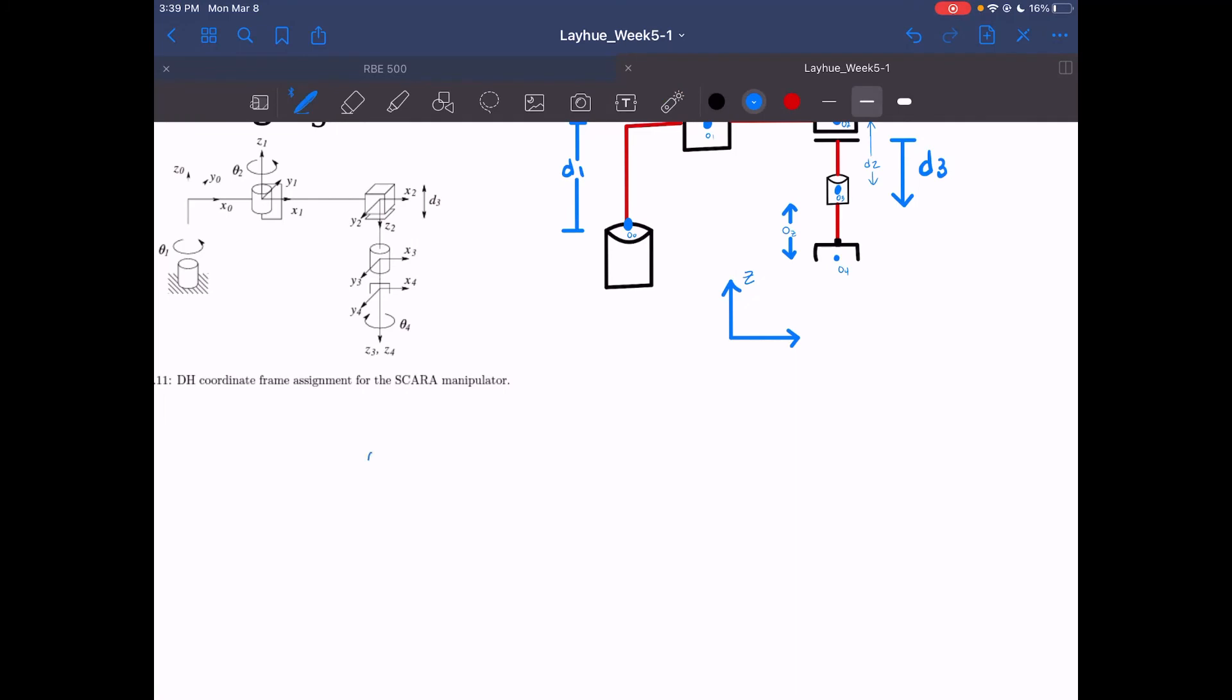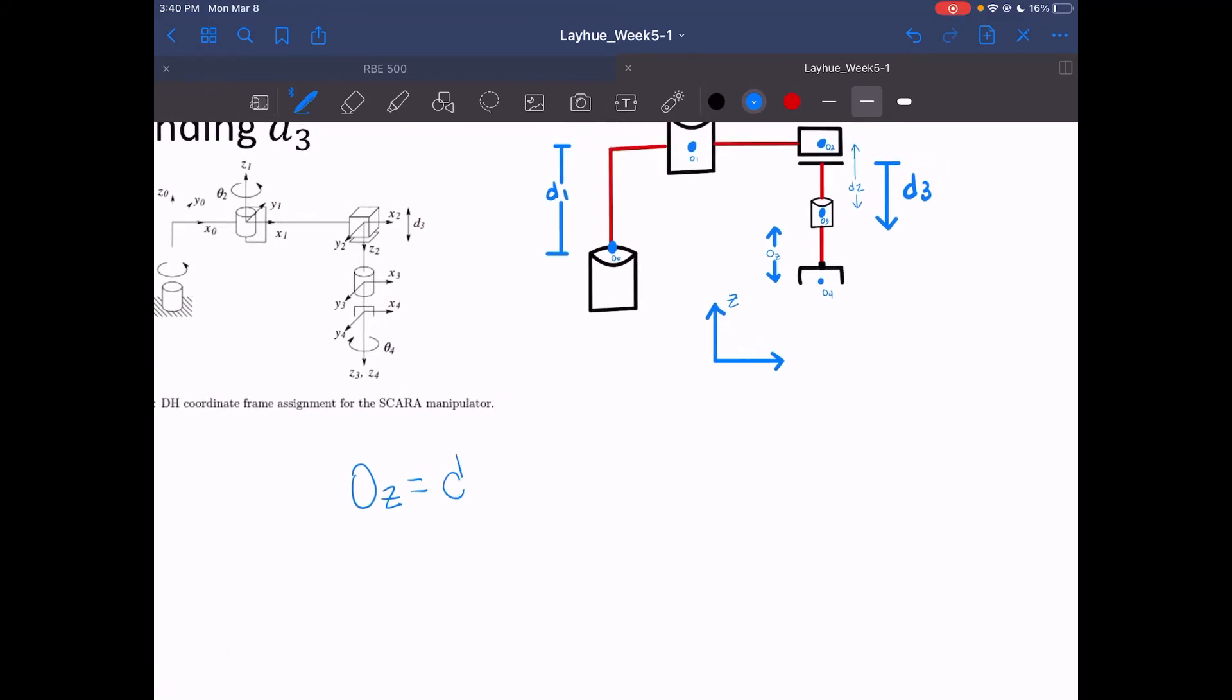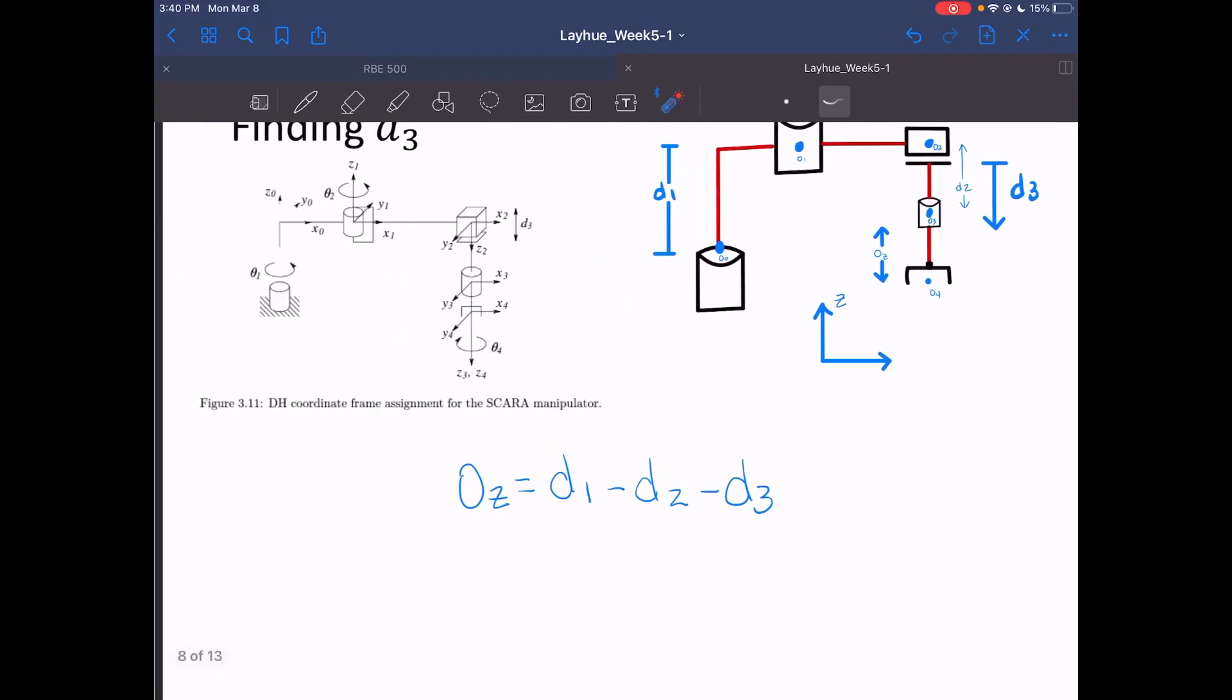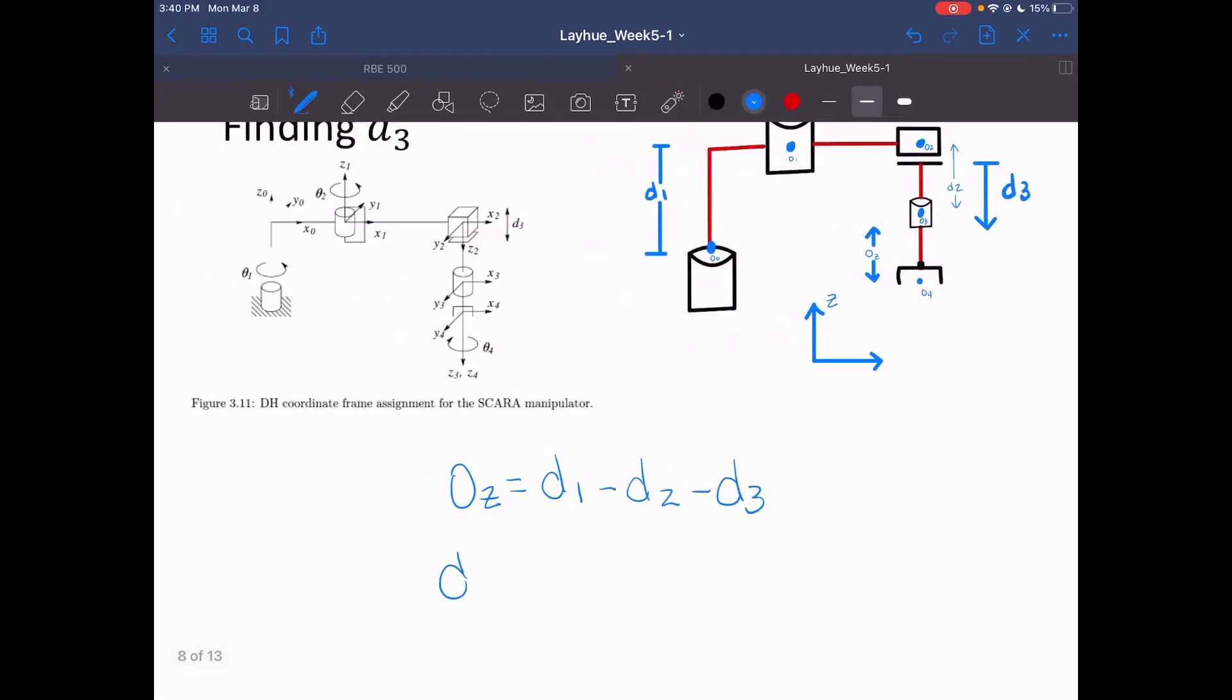So in calculating this, we will solve for the center of the end effector, which is going to be OZ. So that's equal to D1, since that's the length within frame 0 and frame 1, minus D2, and then minus that variable D3. This is all going off of the convention we were laying here, that positive is up for Z. And so if we explicitly solve for D3, we will get D3 is equal to D1 minus D2 minus OZ.